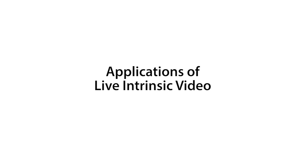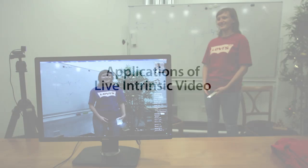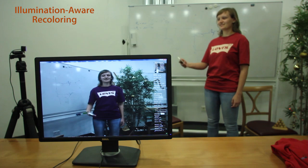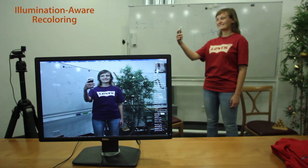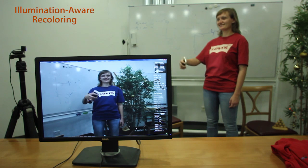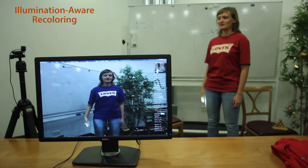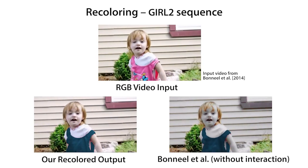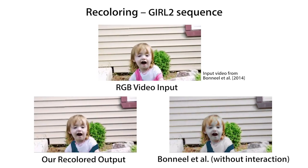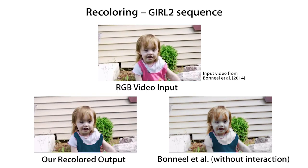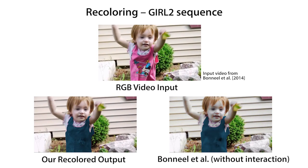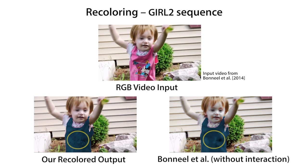We demonstrate some applications made possible by live intrinsic video. We present live illumination-aware recoloring. Note that the lighting from the cell phone interacts realistically with the recolored t-shirt. To test a more challenging scenario, we perform offline recoloring of a multicolored shirt. Our recoloring results show minor texture copy artifacts due to residual texture in the shading layer.